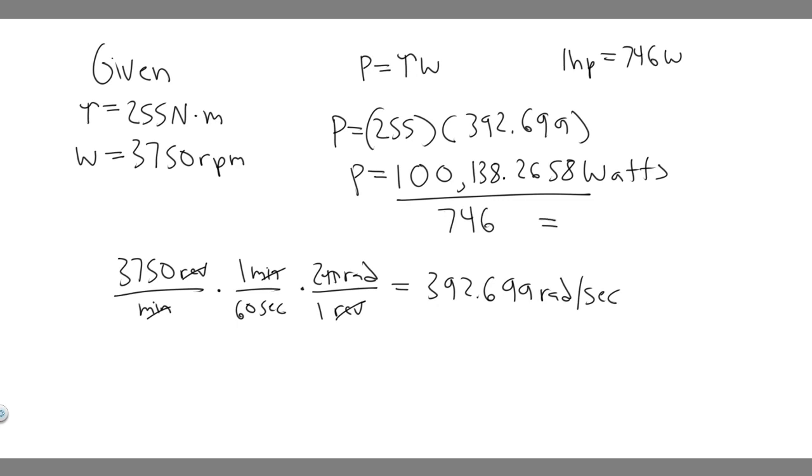And if you go ahead and do that, you're going to get 134.2336 and so on. And this is going to be horsepower. And so I'm just going to round to the whole number. So 134 horsepower. So this is going to be the horsepower of the engine, 134 horsepower. And yeah, so that's your answer. And hopefully you found this useful.